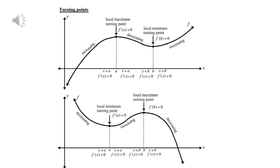Looking at the second graph, when a is negative, it will start with a decreasing function first where the derivative is less than zero. Then at the local minimum, the derivative is zero. Then it increases until it reaches the local maximum, where the derivative is again zero, and then it becomes a decreasing function again. So remember: the top shape is when the a in front of x³ is positive, and the second is when it is negative.